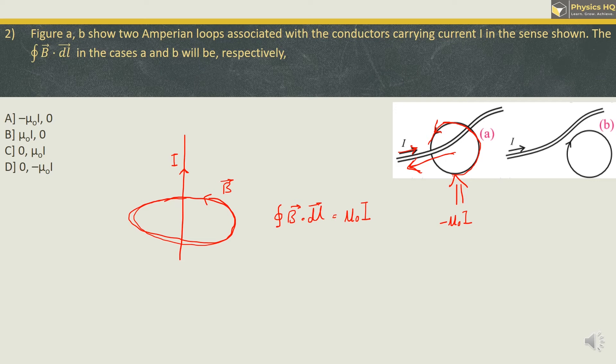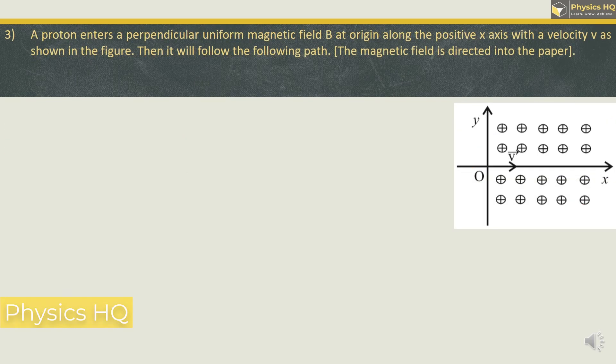In the second case, the current is not enclosed in the loop. If the current is not enclosed, the integral results in 0, because it considers only the current enclosed by the loop. Therefore, the correct option is option A.